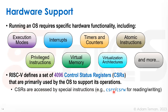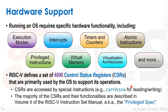CSRs are accessed by special instructions such as CSRR, which is for reading a CSR, and CSRW, which is for writing a CSR. The majority of the CSRs and their functionalities are described in volume two of the RISC-V instruction set manual, which we call the privilege spec. Almost everything we've discussed up till now is described in volume one, the user spec. For a bare metal system, volume one is usually sufficient, but when we want to support an operating system we have to go into volume two, the privilege spec, where most of the CSRs are described.